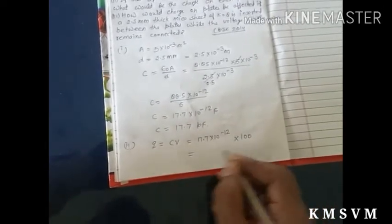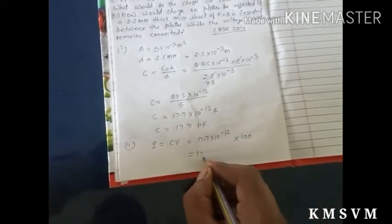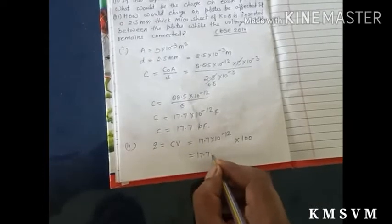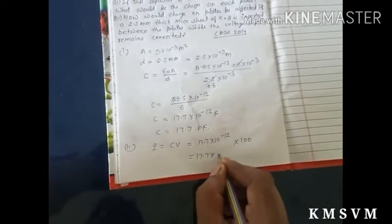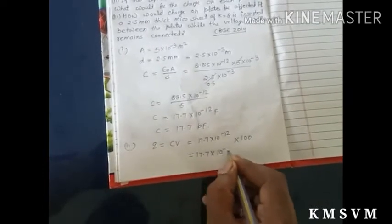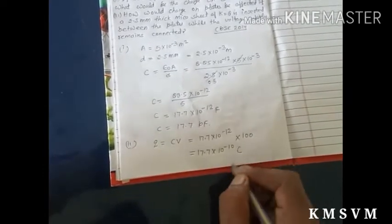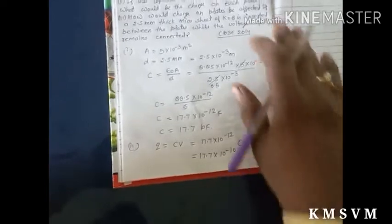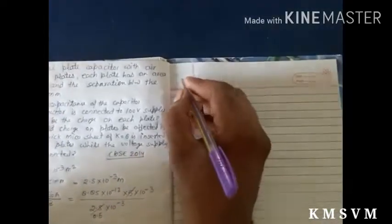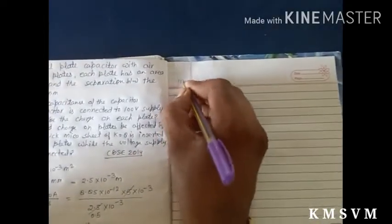Multiplying, we get Q = 17.7 × 10⁻¹⁰ coulomb. This is our charge. For the third point, we need to find the effect when a mica sheet is inserted between the plates.